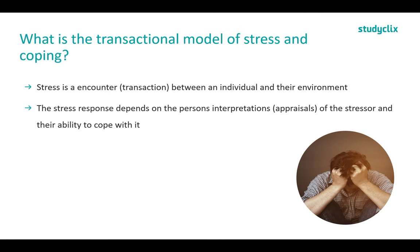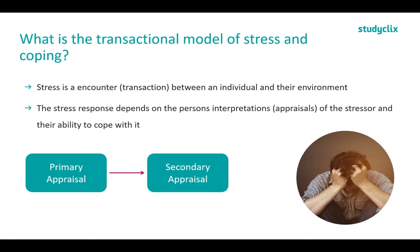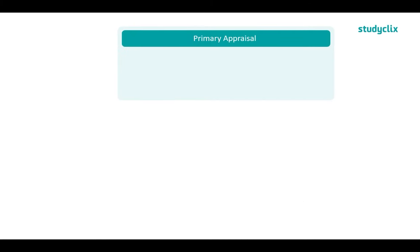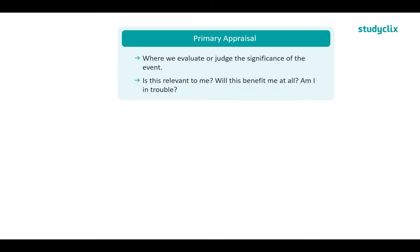This model consists of two stages: primary appraisal and secondary appraisal. In the primary appraisal, we evaluate or judge the significance of the event. We ask ourselves: is this relevant to me? Will this benefit me, or am I in trouble? If it is irrelevant to us, we won't worry about the event at all — because it doesn't matter to us, so why would we stress over it?